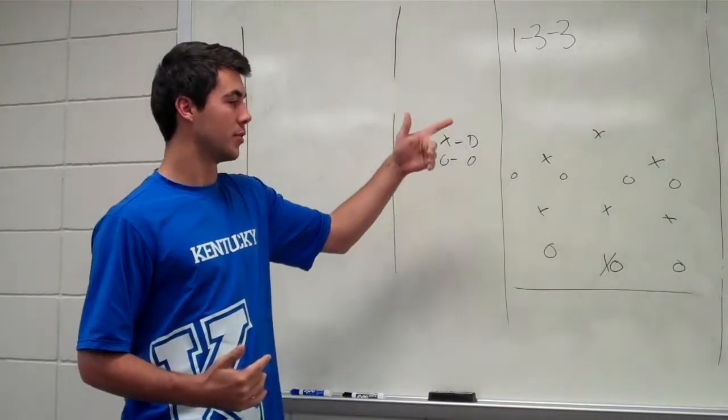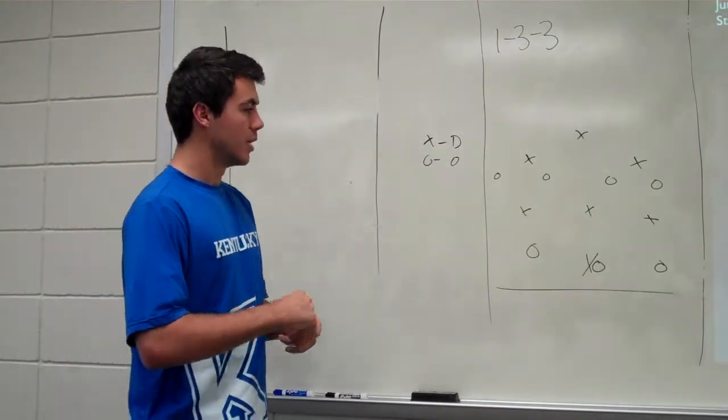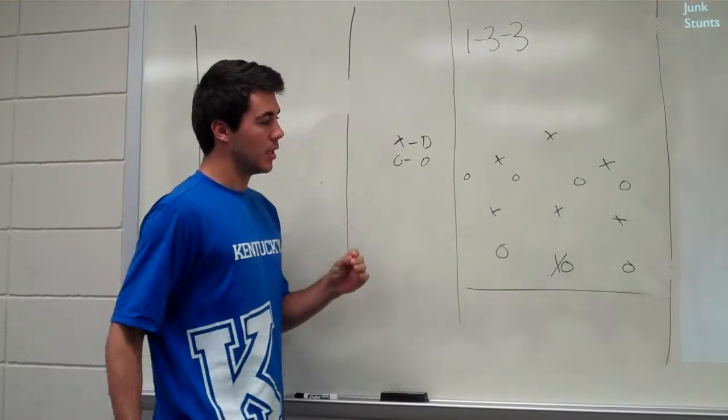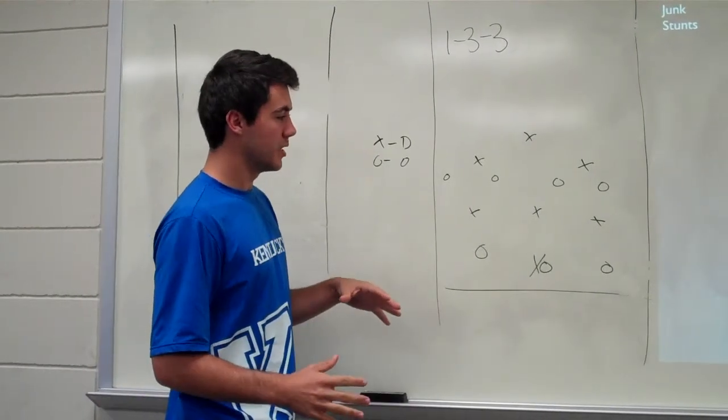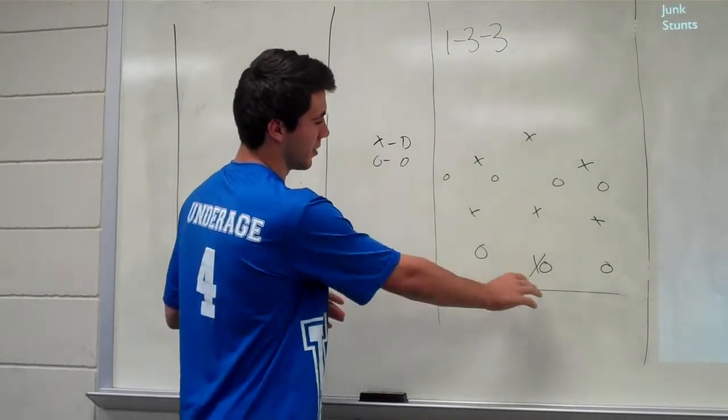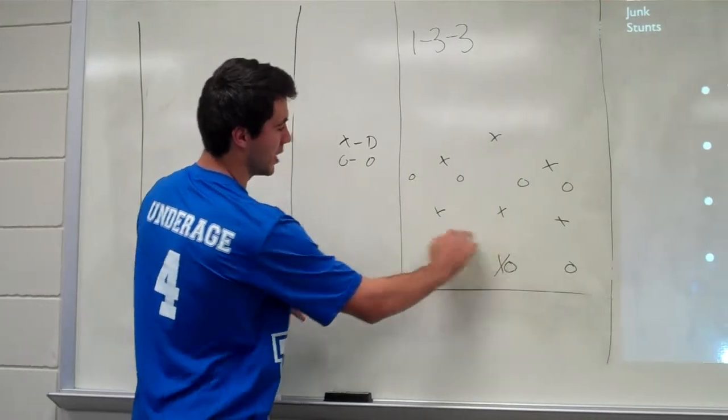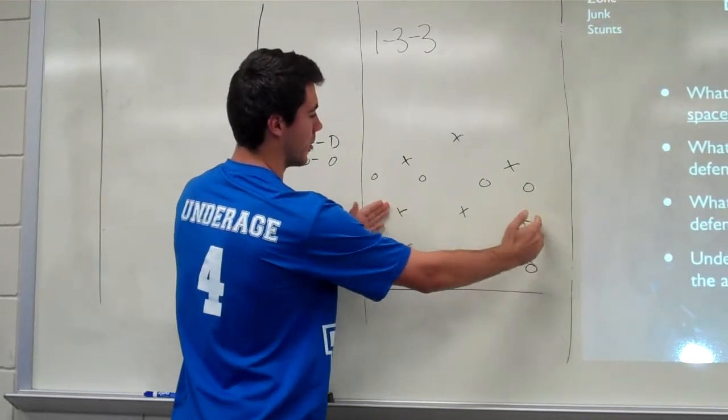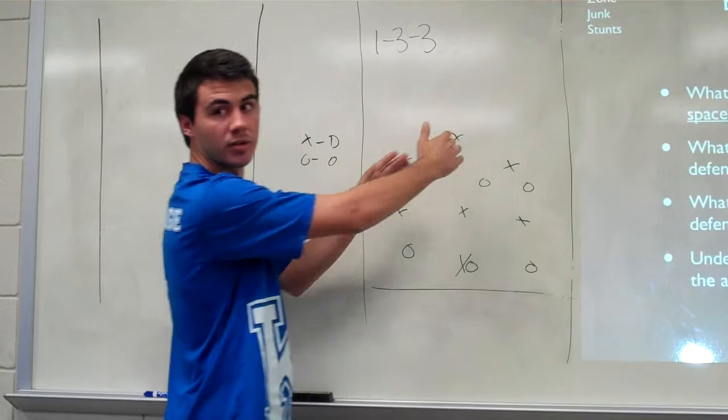I'm going to be talking about the 1-3-3 zone, and it's also known as the Christmas tree defense. If you can kind of see it, there's the base of the tree, and then gradually as you get up, it kind of closes into a triangle.